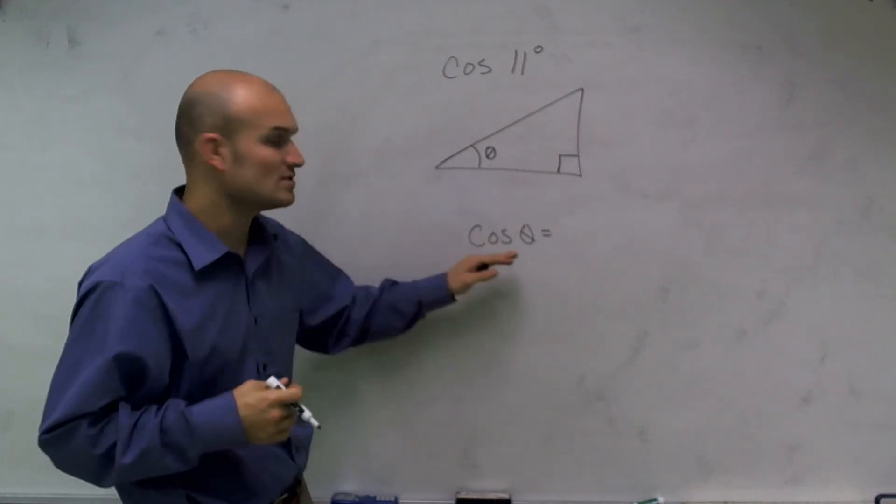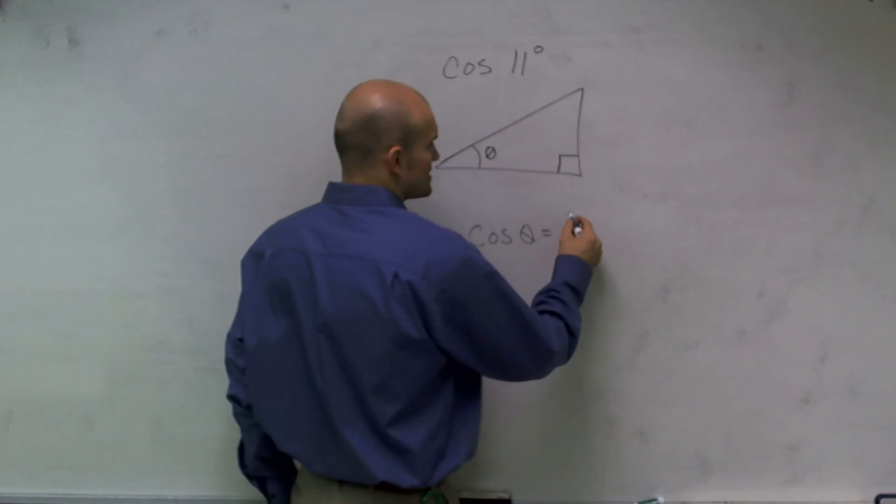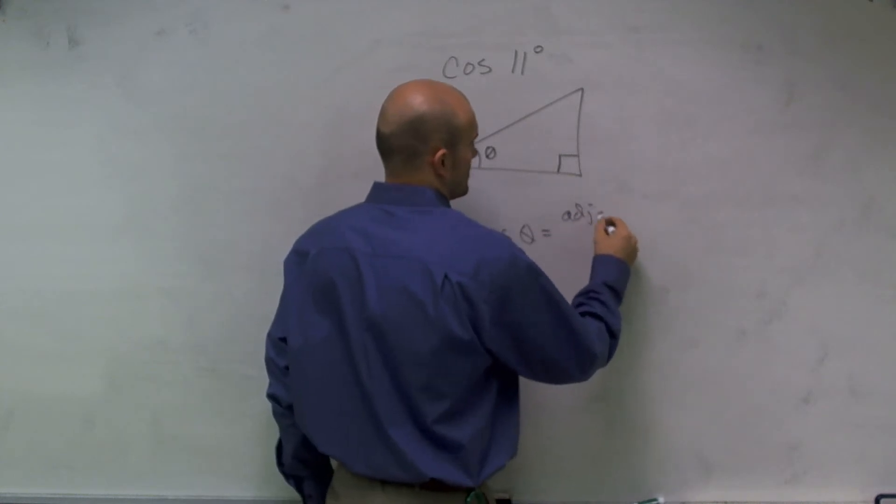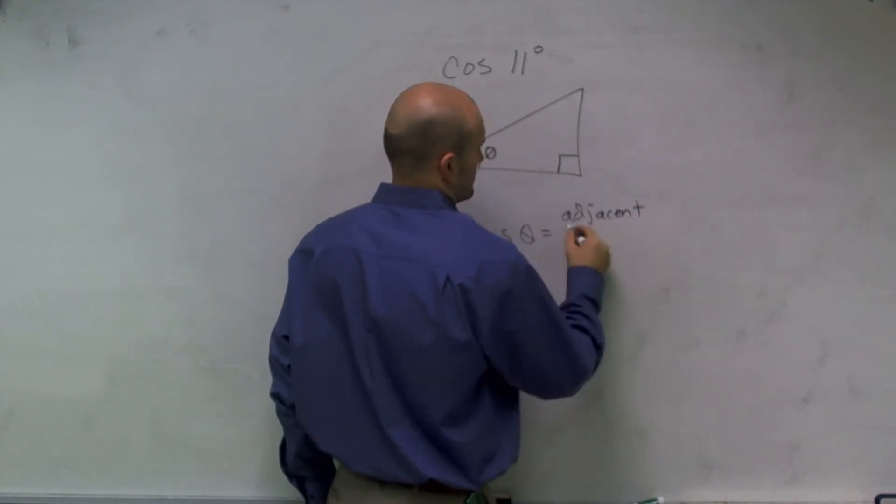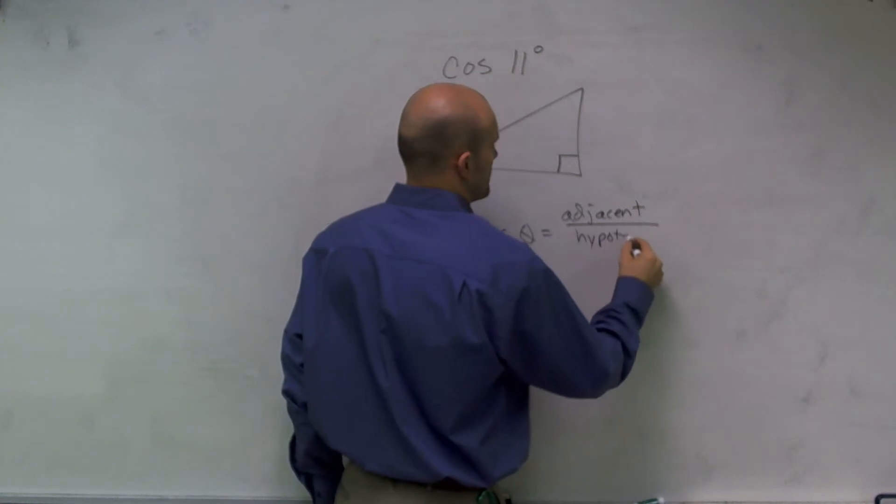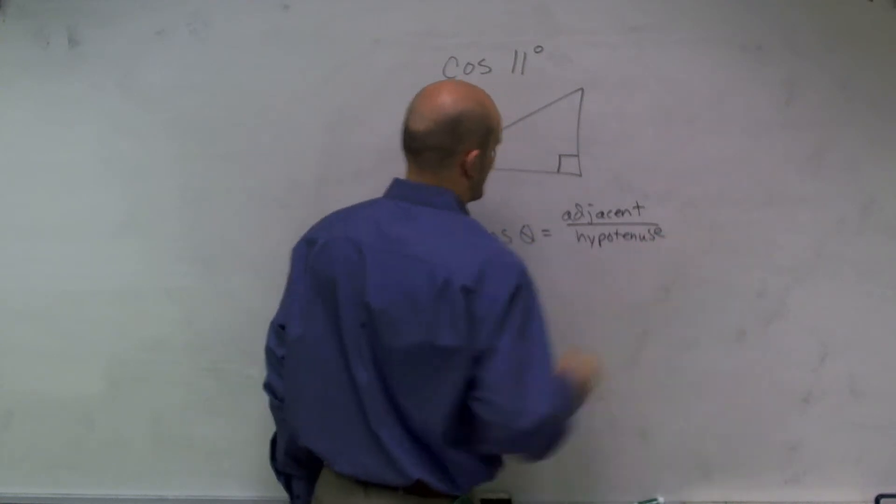So first thing we need to remember is cosine of theta is going to represent our adjacent side all over our hypotenuse.